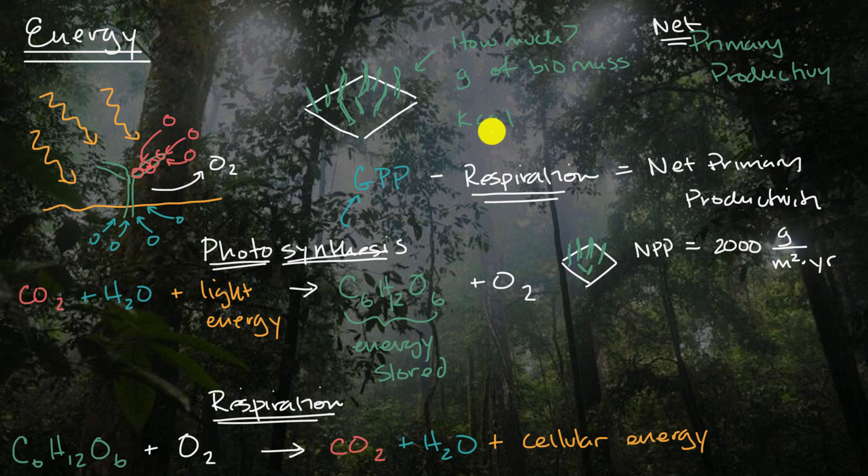And if you wanted to think about this in terms of kilocalories, you just have to say, well, each gram of biomass is how many kilocalories - and it depends on the type of biomass - but let's say that we have four kilocalories per gram of biomass. So then we could also say that this net primary productivity is equal to 2,000 grams per square meter per year times four kilocalories per gram.